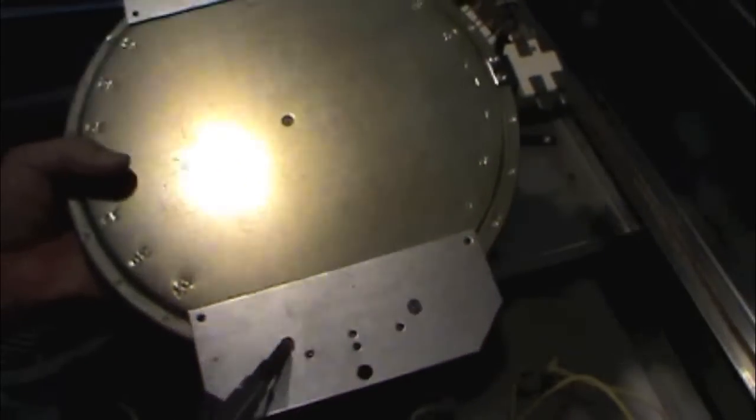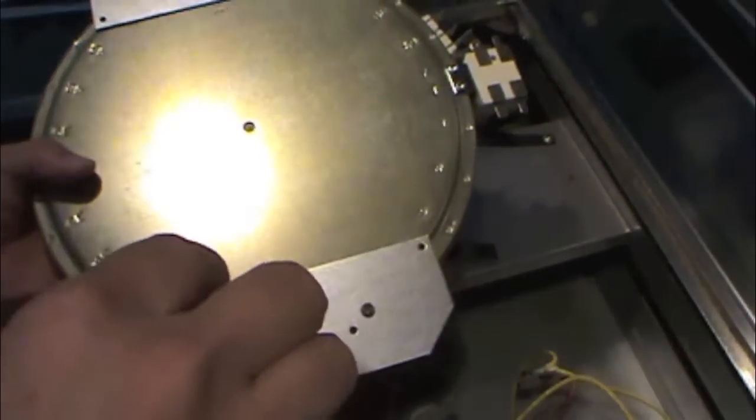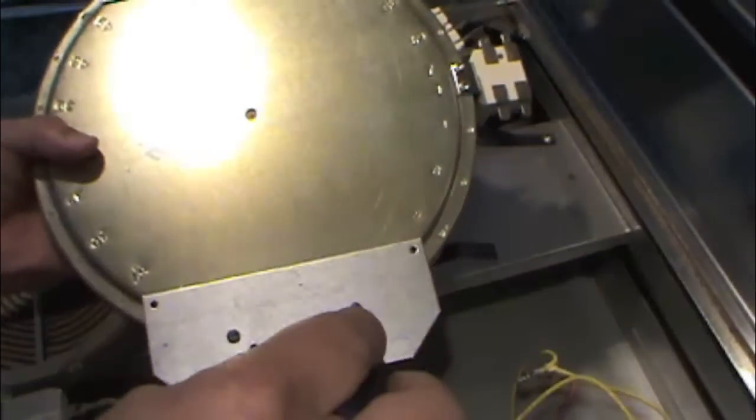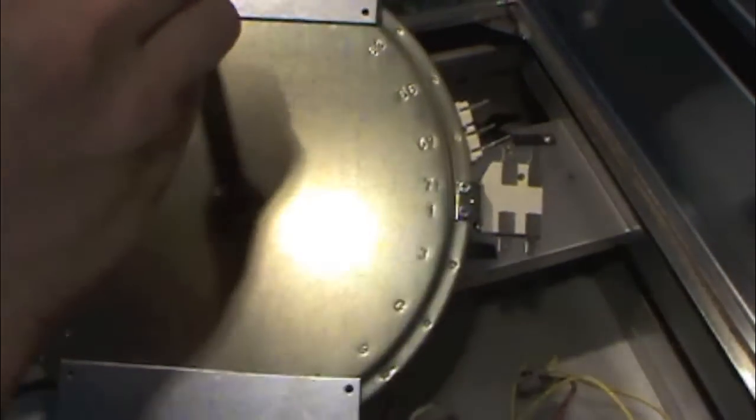Once you're done putting in these brackets on the bottom of the new burner, you'll be ready to go ahead and put the burner back into the range top.